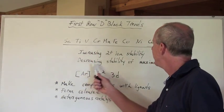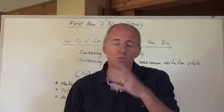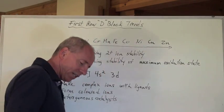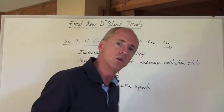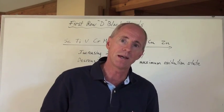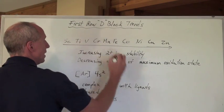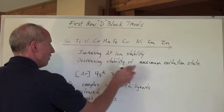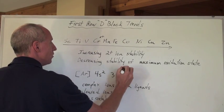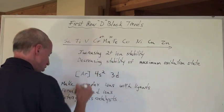But we also have a decreasing stability of the maximum oxidation state. For instance, the maximum oxidation state — or maximum positive charge — that chromium has is 6+, because chromium is 4s2, 3d4, so you can take away all 6 of its outermost electrons to make a 6+ charge. Manganese is 3d5, so you can take away all 7 electrons to make a 7+ charge.